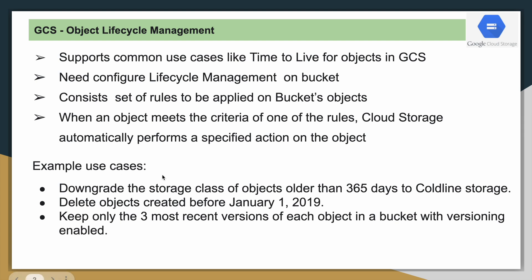Coming to the use cases: one use case is where you want to downgrade the storage from Standard to a lower tier like Nearline or Coldline after a certain period of time, for example 365 days. You can set all this as part of your lifecycle management. Another use case is if you want to delete an object created before January 1st 2023. Also, you can keep only the three most recent versions — this involves a concept called object versioning, which we will discuss in a different video.